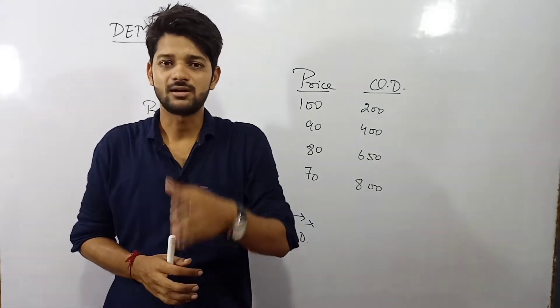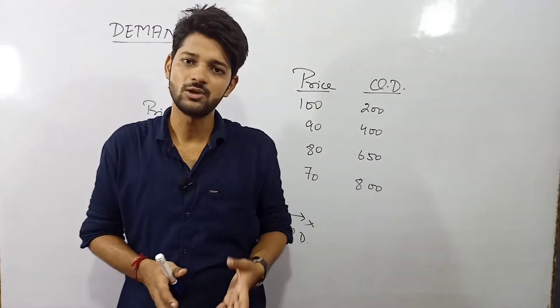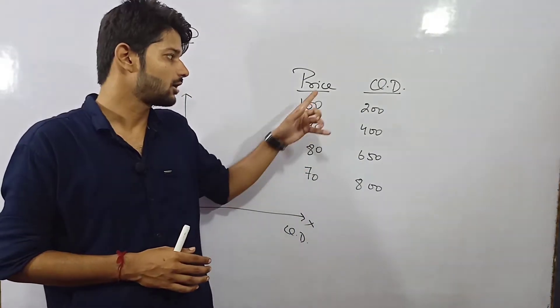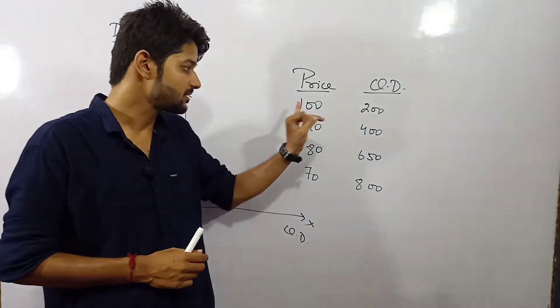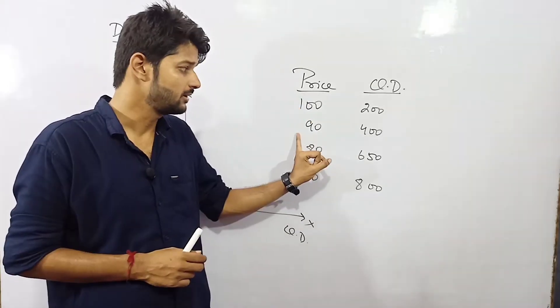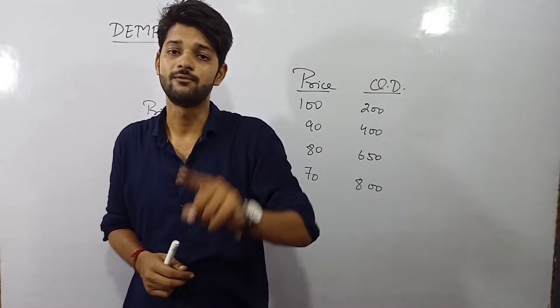So let us clear it through a schedule and diagram. The price of the commodity was 100 and the consumer was having 200 units of consumption. Now as the price decreases from 100 to 90, the quantity of consumer has been increased from 200 to 400.